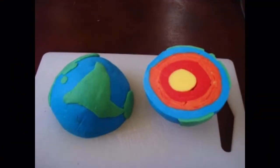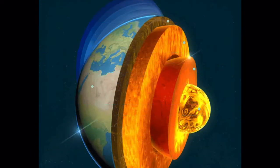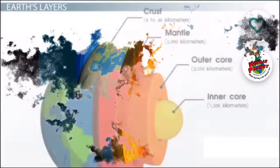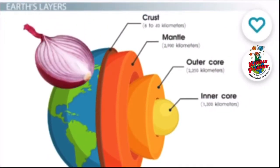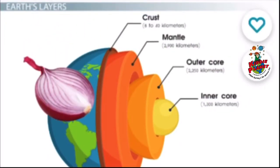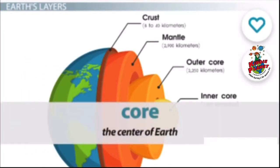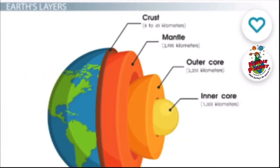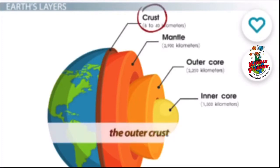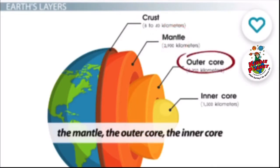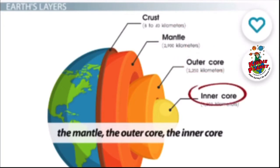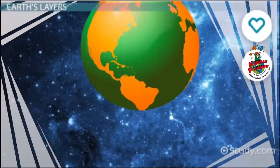The earth has four layers. Like the layers of an onion — if you peel it, you get close to the center. The center of the earth is called the core. The crust is the outermost layer where we live. Then you have the mantle, the outer core, and the inner core, which is the center of the earth.